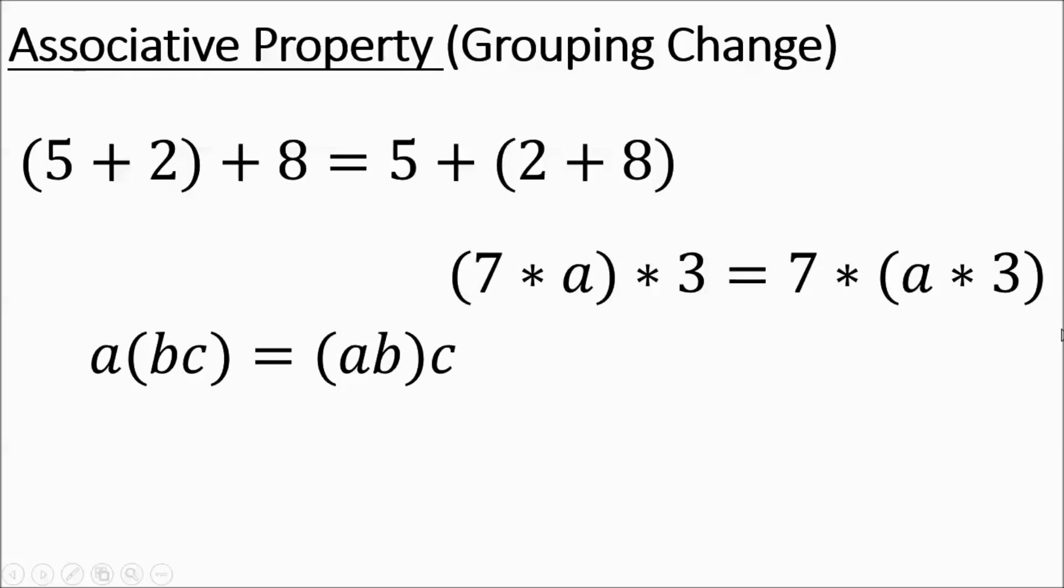A, B, C, A, B, C. So here it's A times the product of B times C. Here it's the product of A times B times C. You'll get the same thing either way.